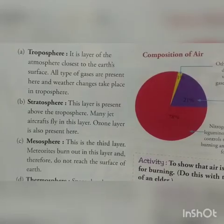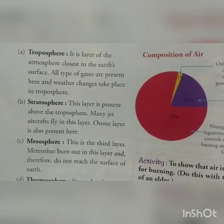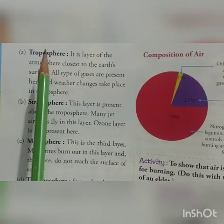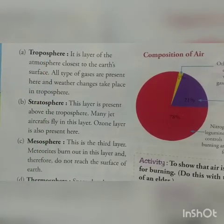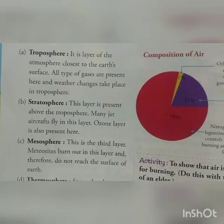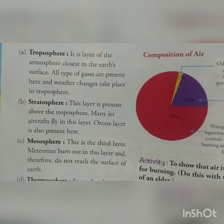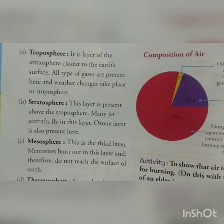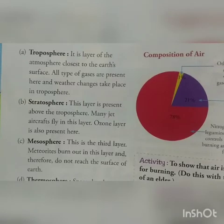The first layer is the troposphere. It is the layer of the atmosphere closest to the earth's surface. All types of gases are present here and weather changes take place in the troposphere.